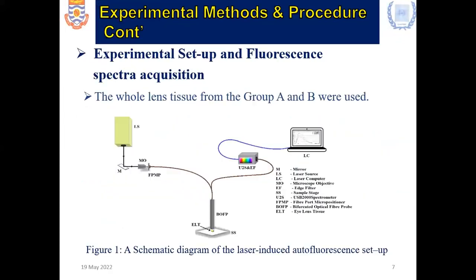After cataract was developed, the cataractous lenses were removed, integrated, and saved for measurements. This is the experimental setup — the laser-induced autofluorescence setup used to acquire autofluorescence from lens tissues of both healthy and cataractous lenses. It comprises a laser source in the visible region: 445 nanometer and 405 nanometer light sources, a microscope objective, a fiber port, a microprocessor, a fiber, and a UV-2000 spectrometer as the detector system.